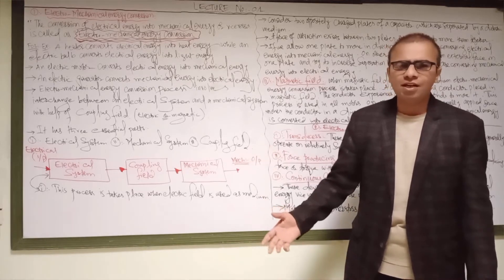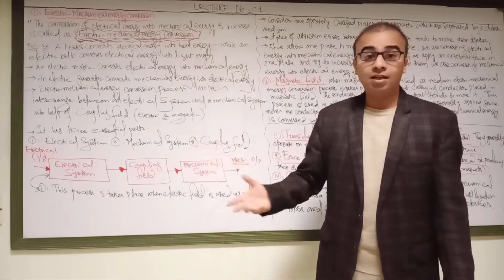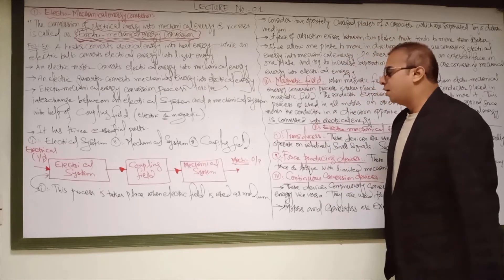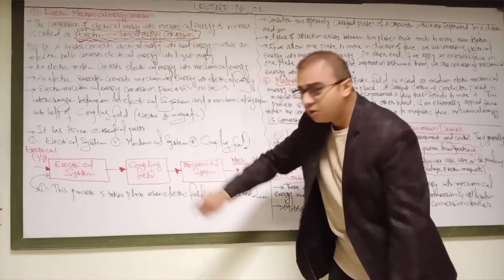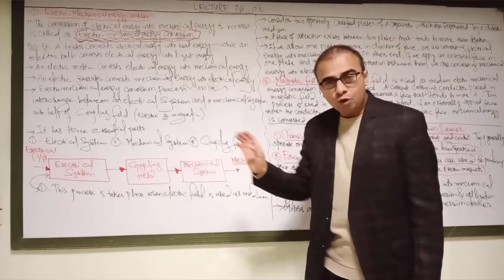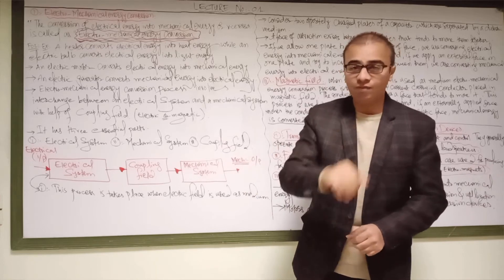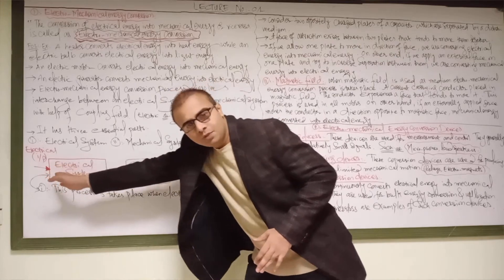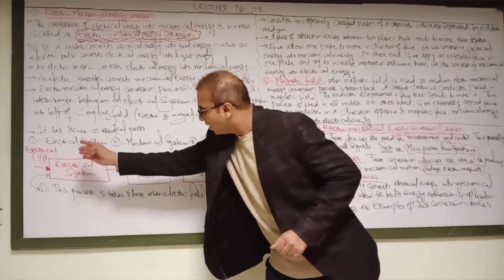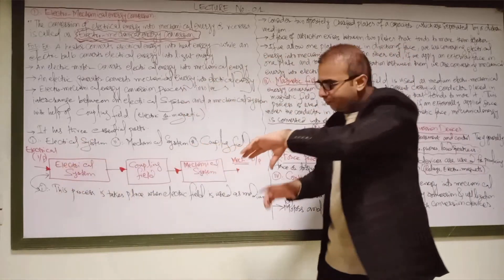Generators can be AC generators or DC generators. In our laboratory series we have done several experiments on DC generators. Alternators are three-phase synchronous generators used in our power plants for the production of bulk amounts of electrical power. Now the electromechanical energy conversion process is represented by a block diagram consisting of the electrical system, the coupling field, and the mechanical system. If we go from the electrical energy as input to the mechanical energy as output — left to right — this principle of operation is called motor operation, because electrical energy is provided as input.